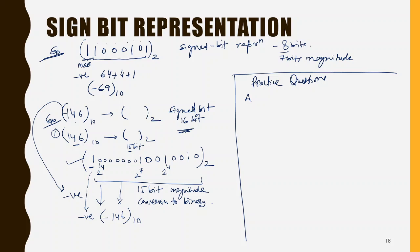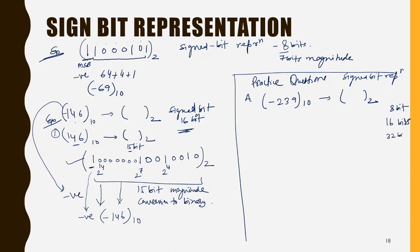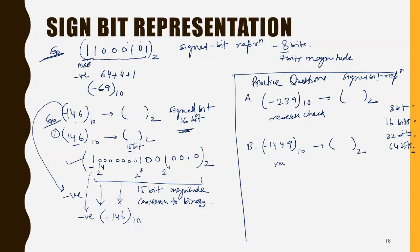The practice question for you: convert minus 239 in decimal to binary using sign bit representation. You can choose the number of bits required — if 8 bits are not enough, take 16; if 16 are not enough, take 32. This mirrors how computer systems work — 8, 16, 32, 64-bit systems. Convert minus 239 and also reverse-check it. Then convert minus 1449 decimal to binary and also reverse-check.